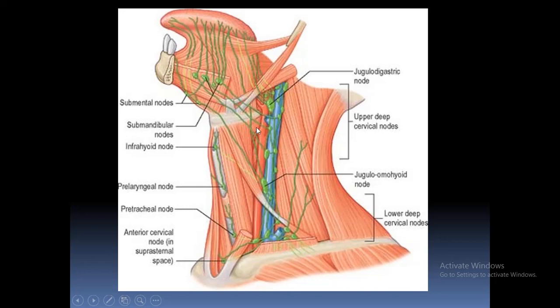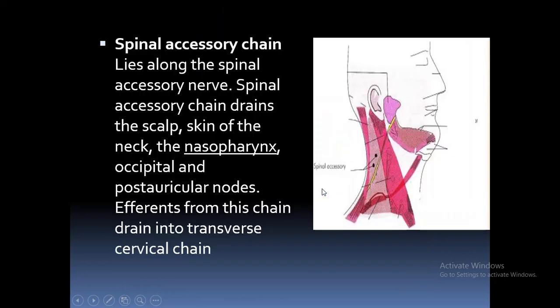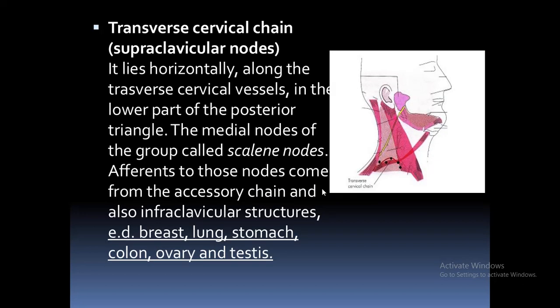In the picture, you can see the different groups of lymph nodes grouped at different levels. The spinal accessory chain lies along the spinal accessory nerve and drains the scalp, skin of neck, nasopharynx, and occipital and postauricular nodes; efferents from this chain drain into the transverse cervical chain. The transverse cervical chain, also called the supraclavicular nodes, lies horizontally along the transverse cervical vessels in the lower part of the posterior triangle. The medial nodes of this group are called scalene nodes; afferents come from the accessory chain and also from infraclavicular structures such as breast, lung, stomach, colon, ovaries, and testes.